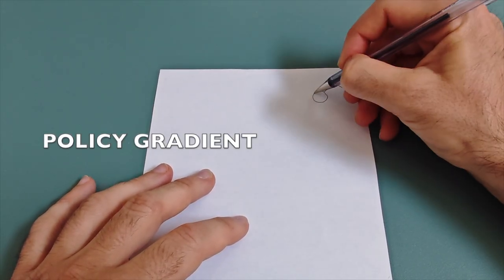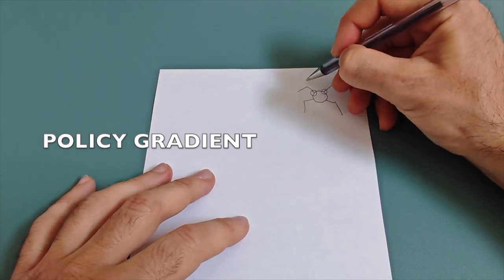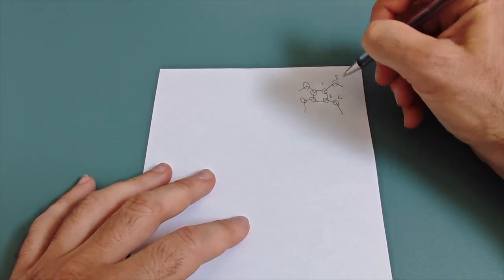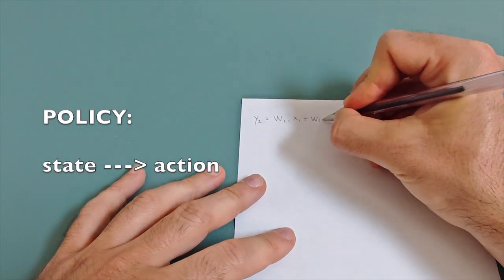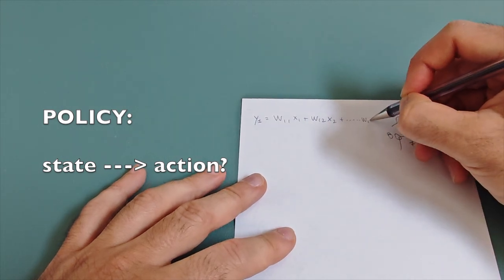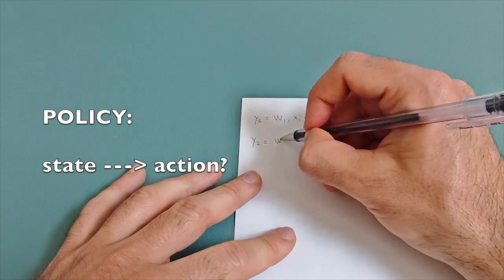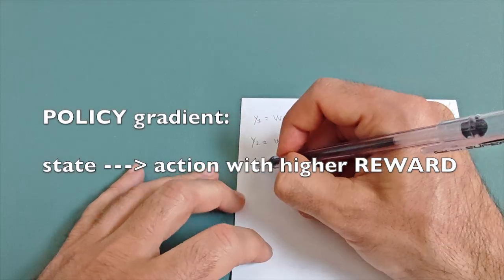Today, we will focus on policy gradient, a reinforcement learning method where the agent directly learns a policy, basically a set of rules for choosing actions. The idea is to tweak the policy in the direction that increases rewards over time.